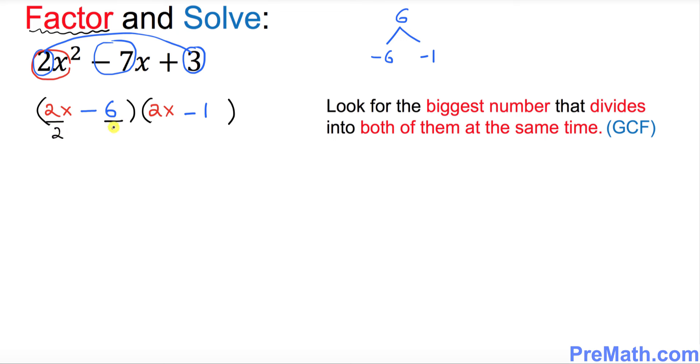In the second parentheses, I don't think there's any number that divides into both. There's nothing in common. Once you simplify, 2 over 2 is simply 1x. 6 divided by 2 is 3. In the second parentheses, just leave it as it is because there's nothing in common. So these are our factors.